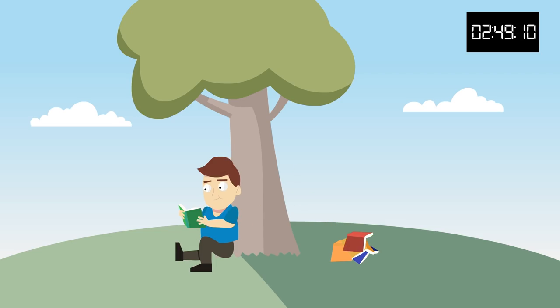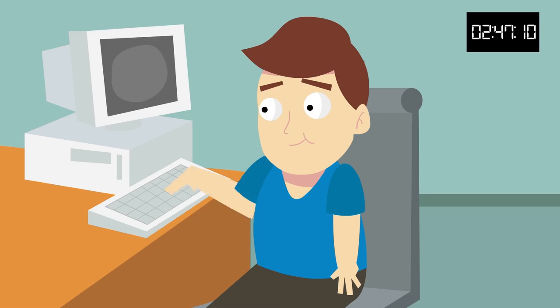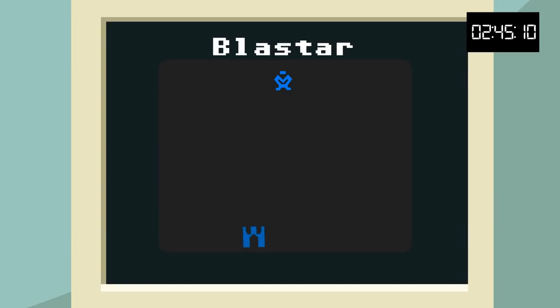He developed a love for reading at a young age and by 12 years old, used self-taught programming skills to develop code for a video game he called Blastar, which he then sold for $500.